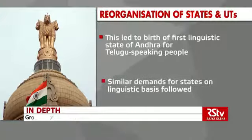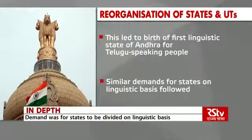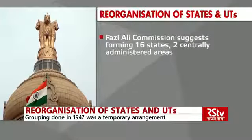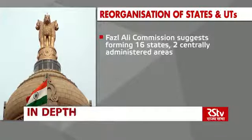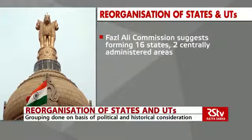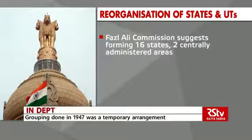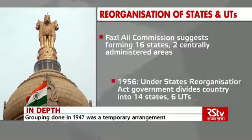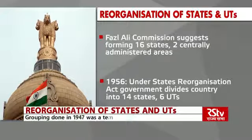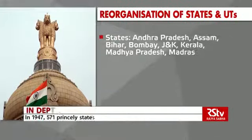This led to the birth of the first linguistic state of Andhra for Telugu-speaking people. Similar demands for creation of states on a linguistic basis followed thereafter from other parts of the country. The Fazl Ali Commission submitted its report on the issue in 1955, suggesting the country be divided into 16 states and 3 centrally administered areas. Under the States Reorganisation Act passed in November 1956, the government divided the country into 14 states and 6 union territories.